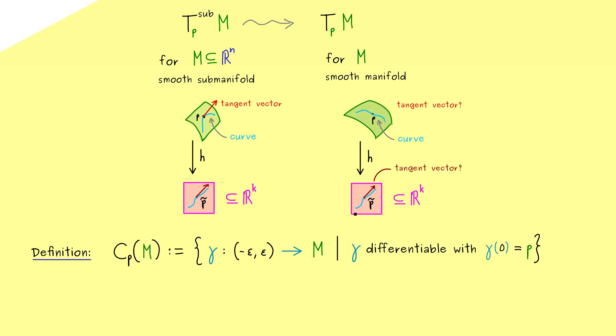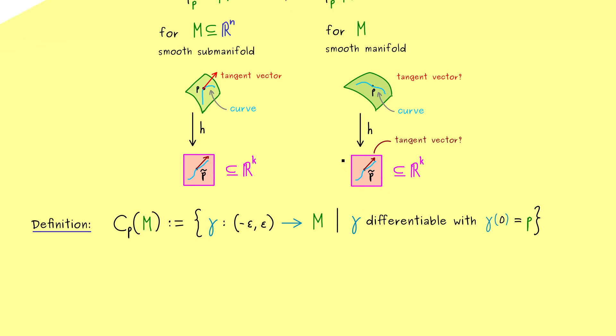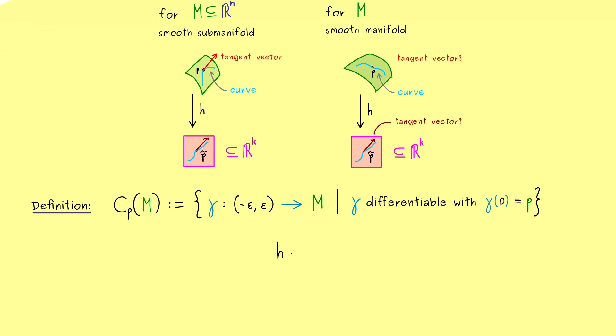And here please keep in mind, M could be a very abstract smooth manifold. And now the only condition we need for these curves is that they are differentiable and go through the point P. And now you know, for such a curve gamma, we can also define the curve here on the lower level. And of course, this will be simply the composition h after gamma.